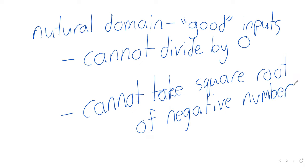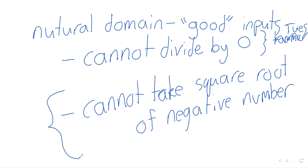We'll talk about division by 0 errors tomorrow. For now, let's see what that second observation gets us — the observation that we cannot take the square root of a negative number. Suppose that we have a function with a square root in it, like the square root of 2x minus 4.